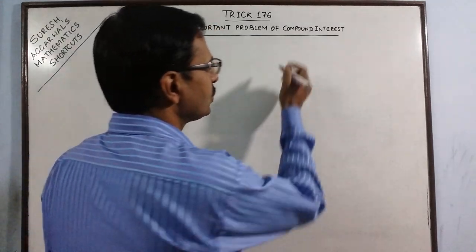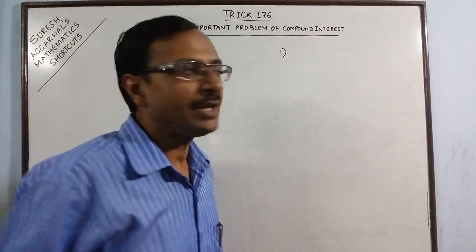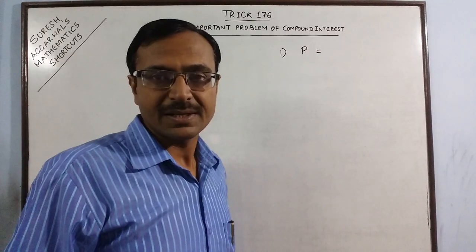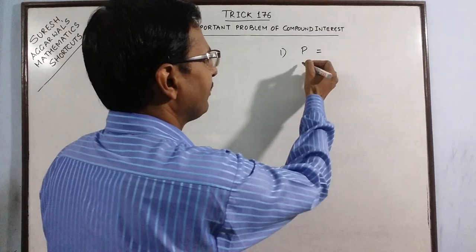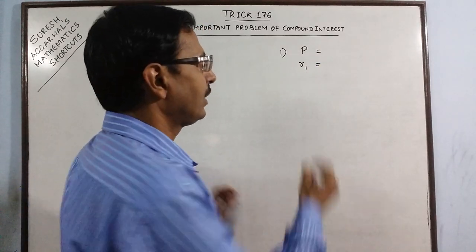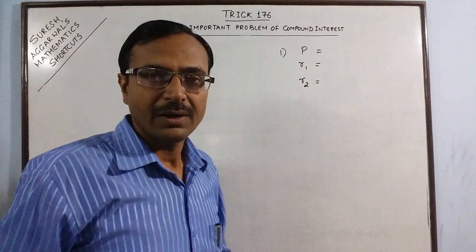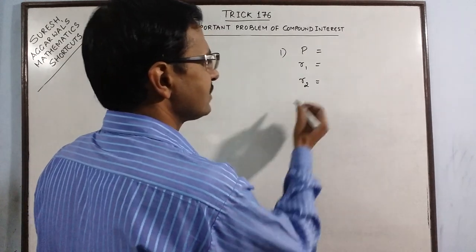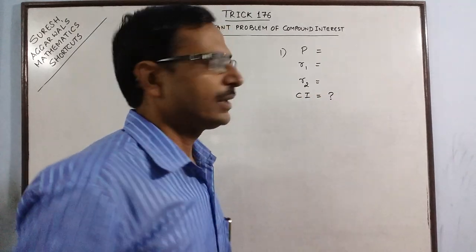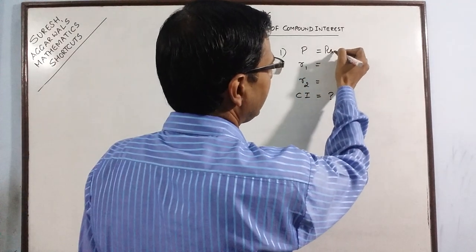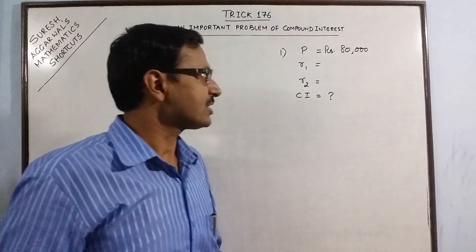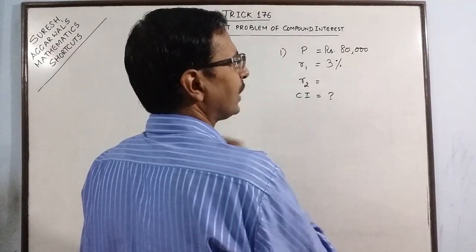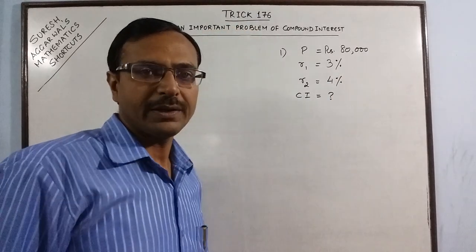In this trick I am going to take a particular type of problem in which we are given a principal amount — that is the amount invested — and the rate of interest is different for different years. We have R1, the rate of interest for the first year, R2 for the second year, and consecutively we can have three years as well. In such cases we need to find the compound interest. Say the principal amount is 80,000 and it is invested for two years at compound interest, but the rate for the first year is 3 percent per annum and for the second year it is 4 percent.